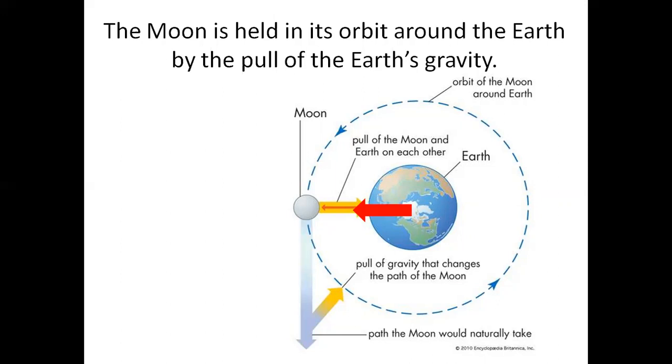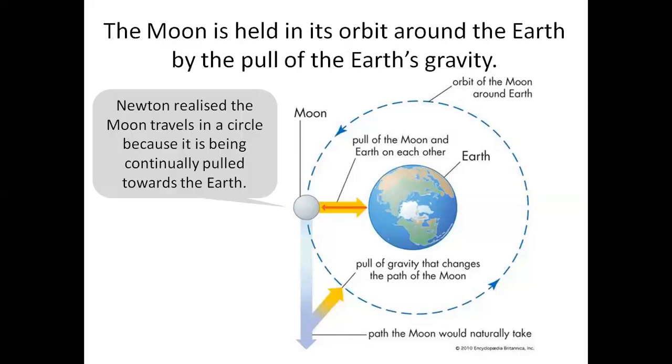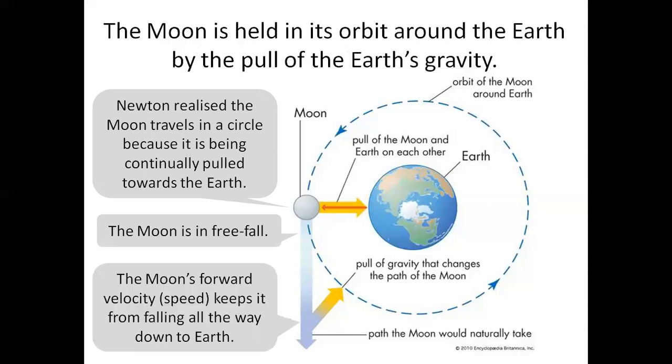The moon exerts a gravitational force on the earth. The earth exerts a gravitational force on the moon. So instead of continuing straight on its course, the moon is attracted towards the earth and the pull of gravity changes the path of the moon. You can realize the moon travels in a circle because it has been continually pulled towards the earth. The moon is in free fall. The moon's forward velocity, its speed, keeps it from falling all the way down to earth.